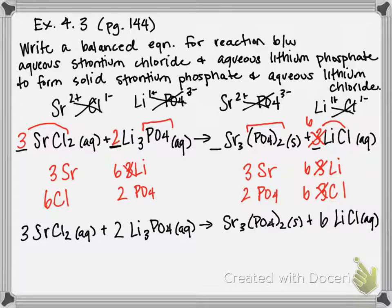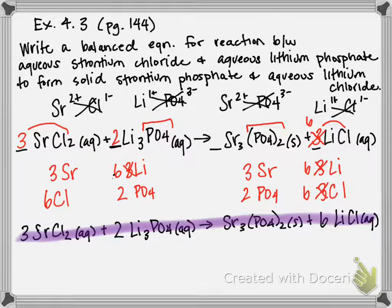And if we count up everything, we have three strontiums on each side, six chlorines on each side, six lithiums on each side, and two PO4 ions on each side. So we are balanced, and this is our final answer.